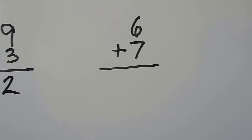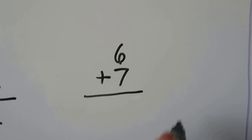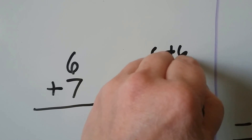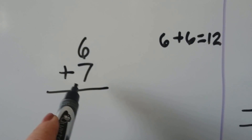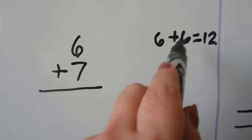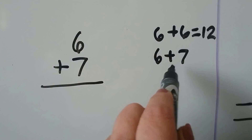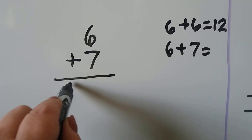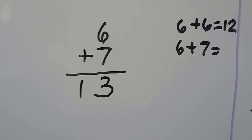6 plus 7. We could use doubles. We can think 6 plus 6 is equal to 12. So 6 plus 7 — 7 is 1 more than 6, so it must be 1 more than 12. It's 13. That's doubles plus 1.